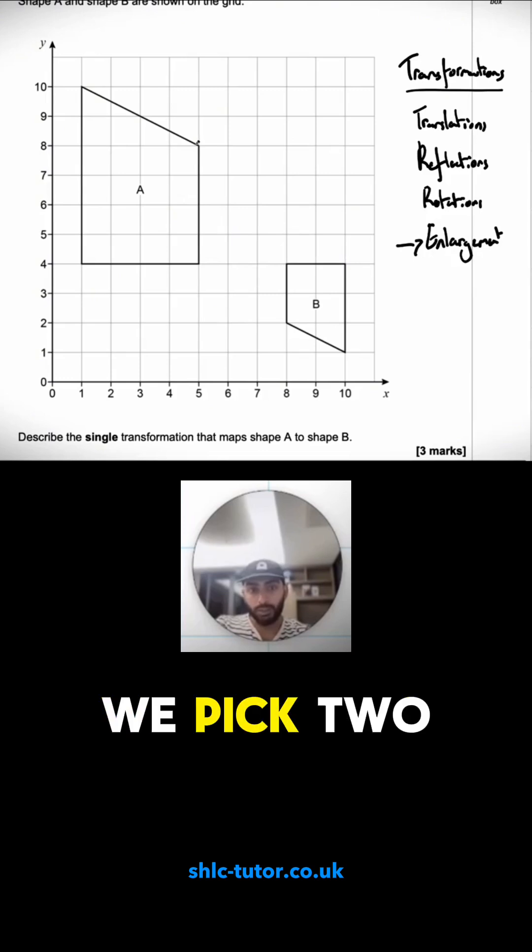The way we do that is we pick two common points and we join them together with a line and then we repeat that a couple of times. So that's our first point done.